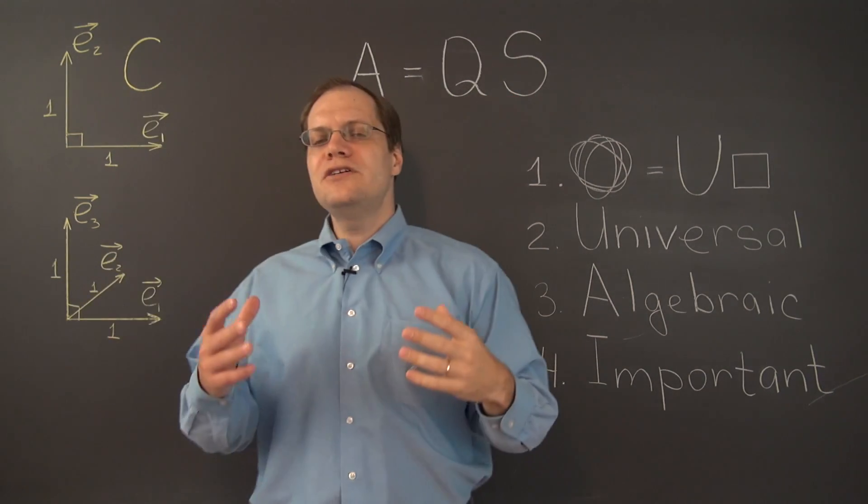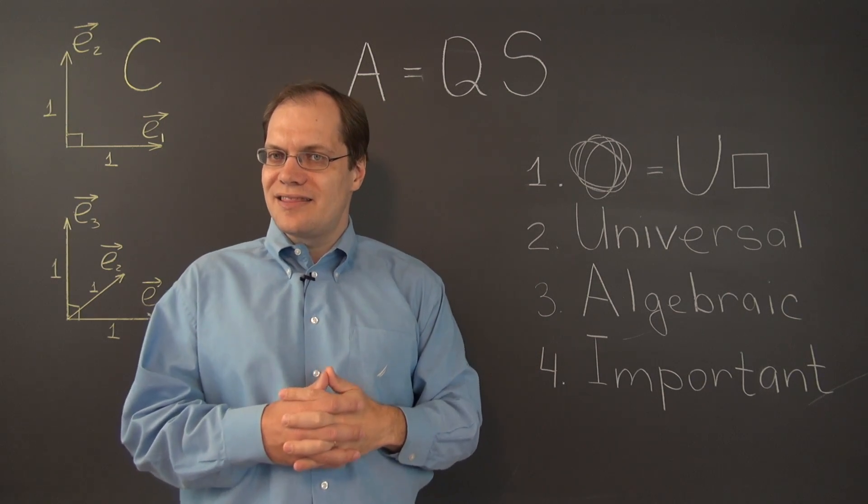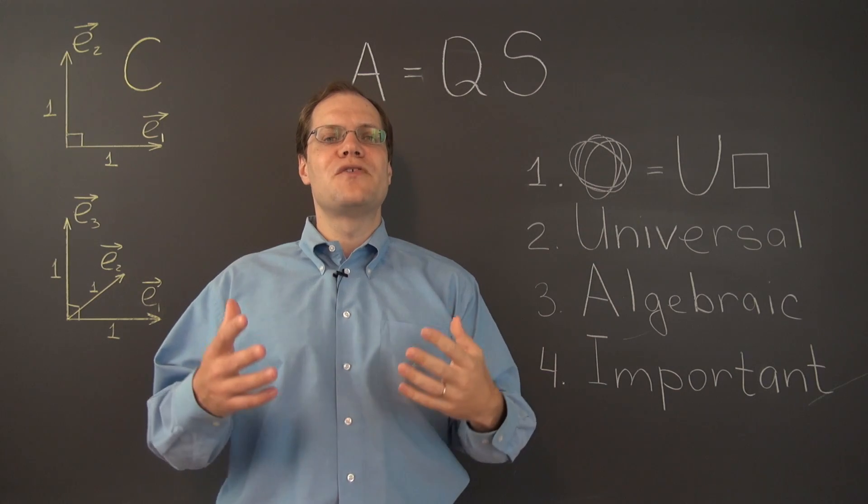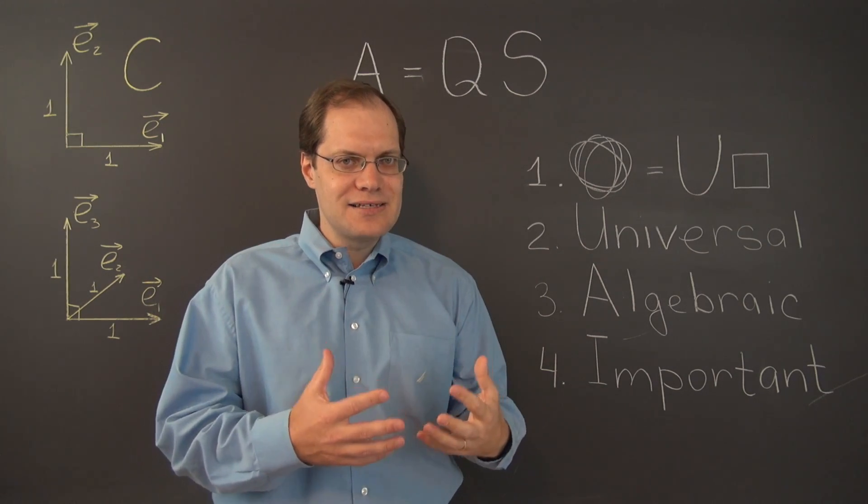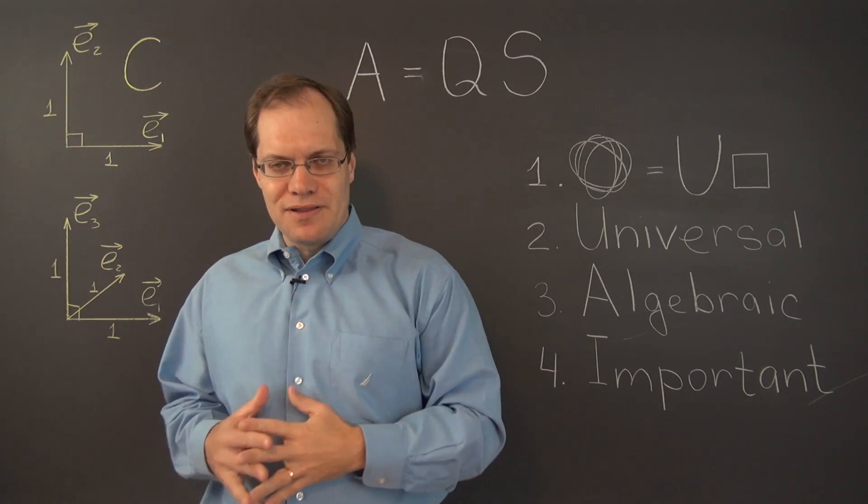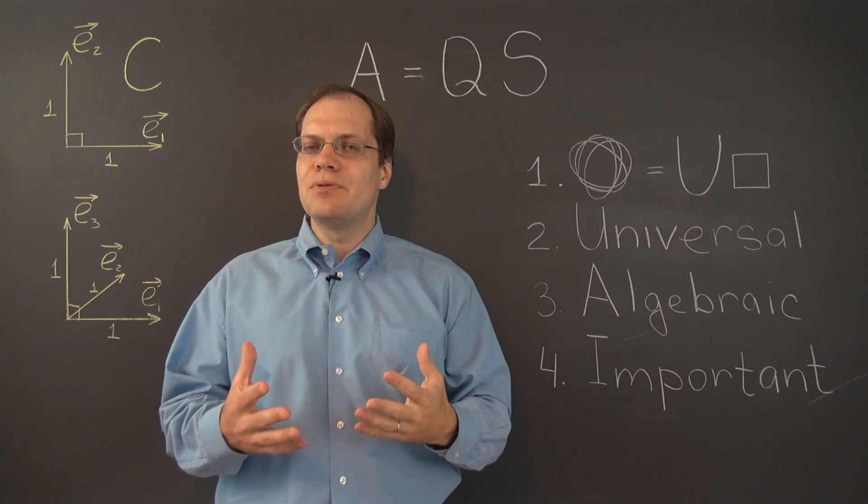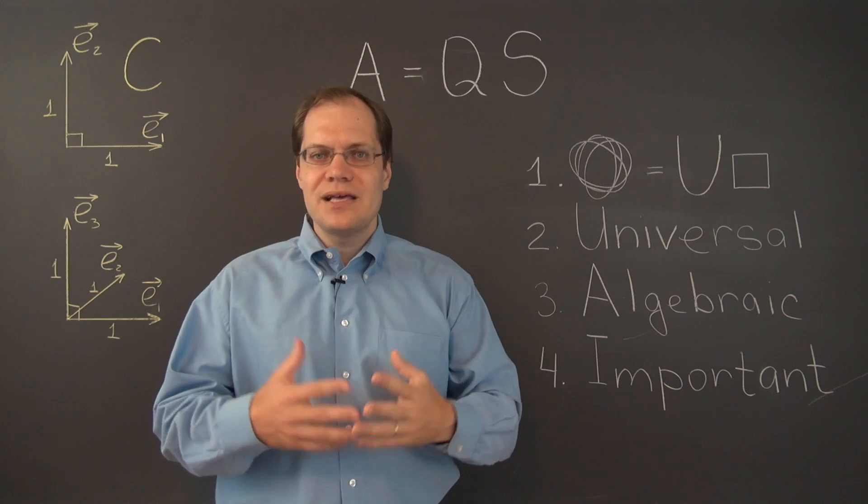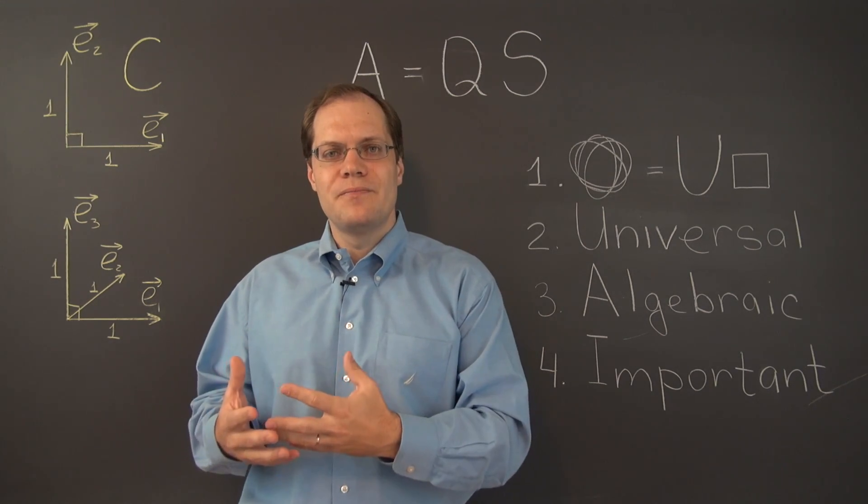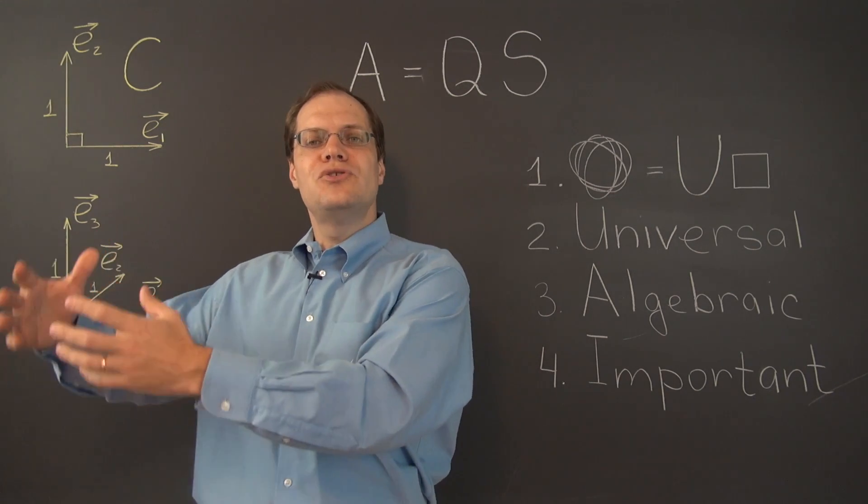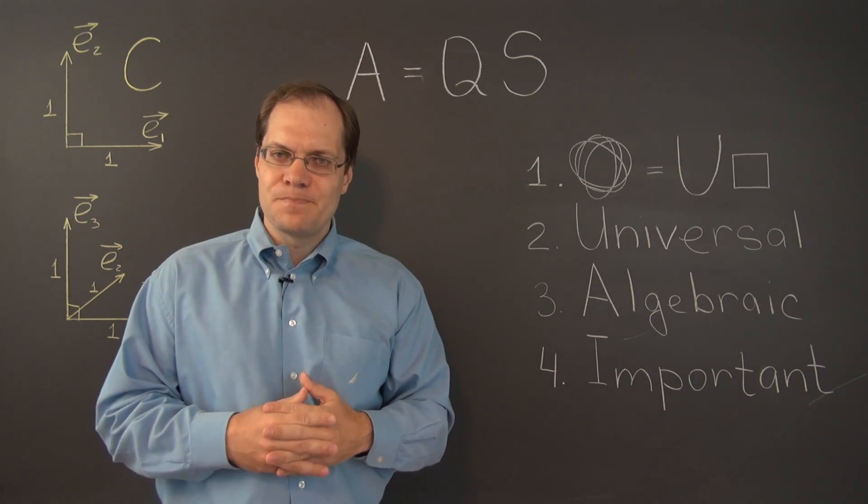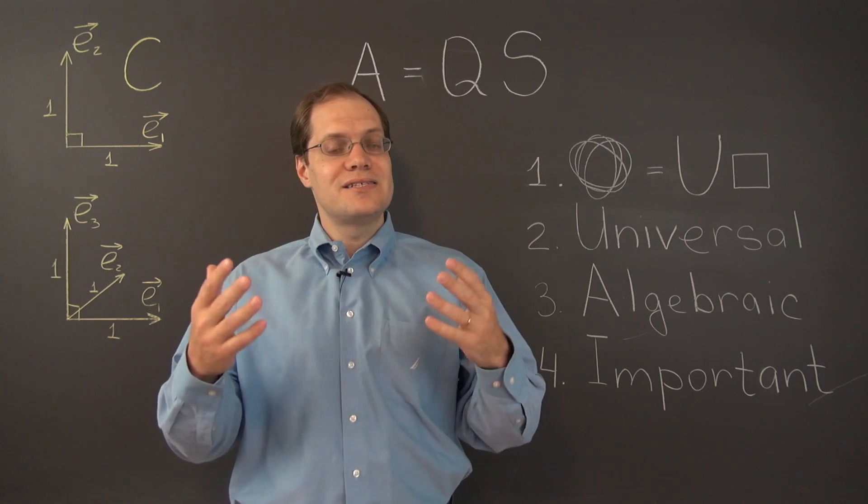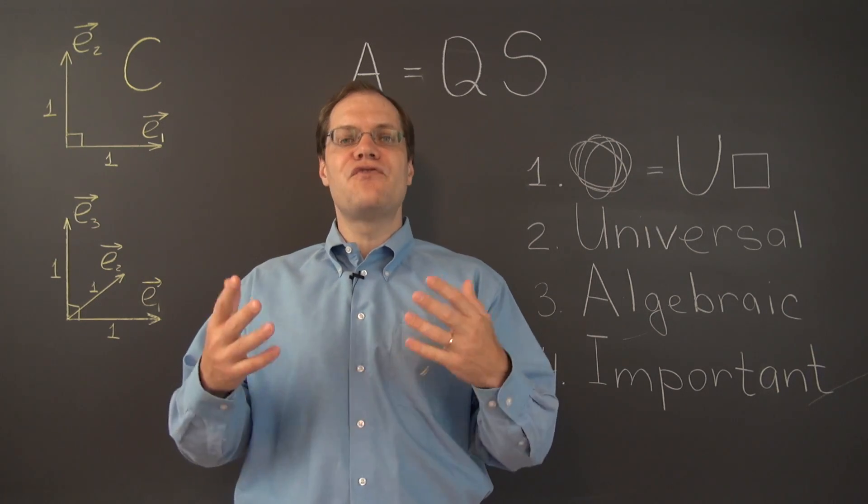Now, there are only two ideas in mathematics that I can think of that eclipse this theorem, in terms of representing complicated things as combinations of simple things. One such example is Newton's statement that any function is actually a polynomial, even if you may need to use an infinite number of terms. Now, that was Newton's approach to calculus. The second example of such an idea is Fourier series.